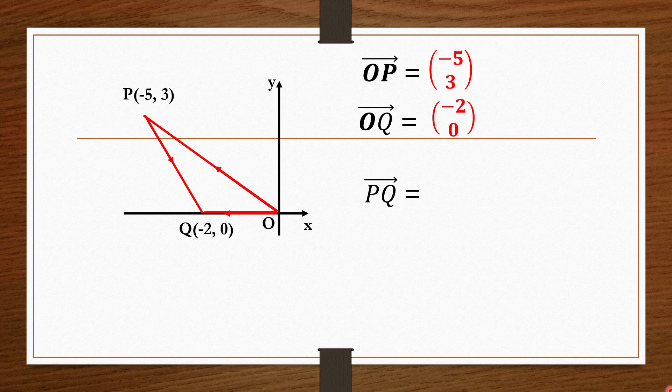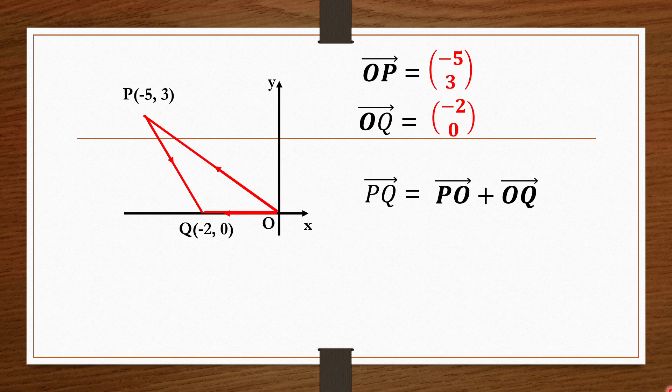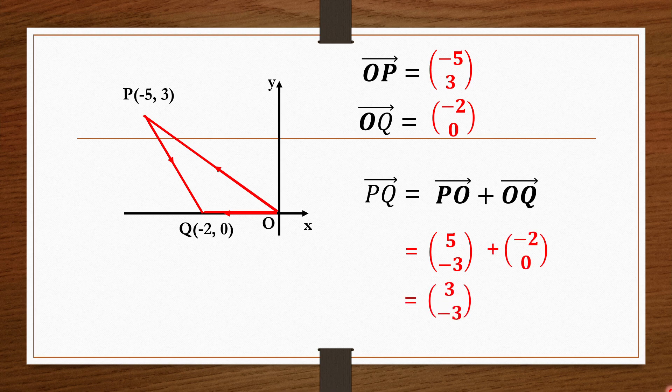PQ is not a position vector, so form the equation: PQ equals PO plus OQ. PO equals negative OP, so change the sign of OP to get (5, −3), then add OQ (−2, 0) and simplify to find the answer.